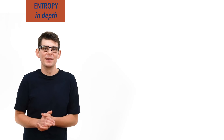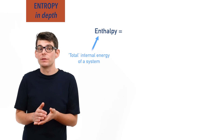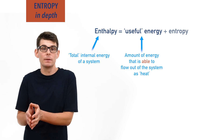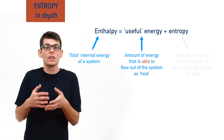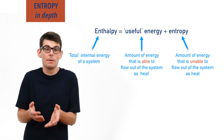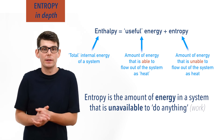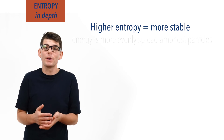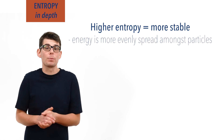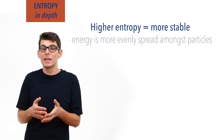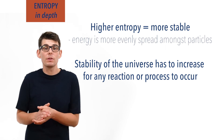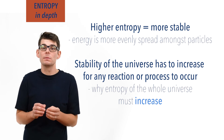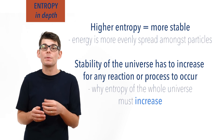To condense all of this down: enthalpy — the energy content of a system — is made up of useful energy that can flow in or out of a substance as heat energy, and entropy. Entropy is the energy that a system has that can't flow in or out of it as heat energy, meaning it is effectively unavailable to do anything. The higher the entropy content of the system, the more stable it is, as the energy is spread out more. In order for any reaction or process to occur, stability of the universe has to increase, and this is why the entropy of the universe must increase during a reaction or process. Be careful though — the entropy of an individual system doesn't have to increase, only the entropy of the whole universe.